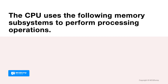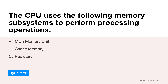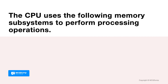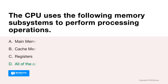The CPU uses the following memory subsystems to perform processing operations. Options are: A. Main memory unit, B. Cache memory, C. Registers, and D. All of the above. Answer is D. All of the above.